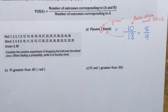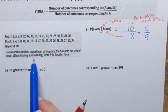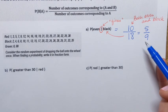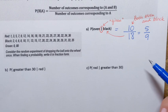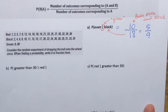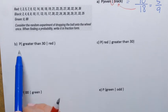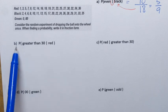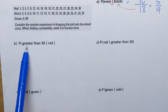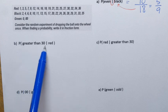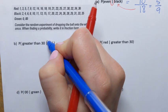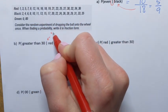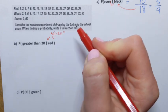We'll leave all answers in fractional form — specifically the simplest form. For question B, we need to find the probability that the ball hits a number greater than 30 given that it's red. When I see the vertical line, I know I'm dealing with conditional probability, and I translate that line as the word 'given.' I'll set up the fraction, starting with the denominator, which is generally a little easier to find.